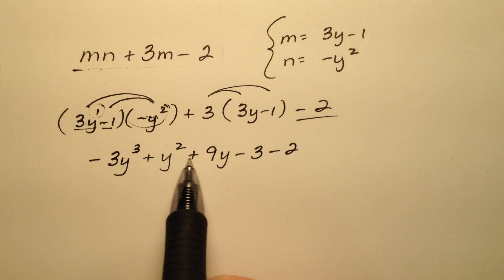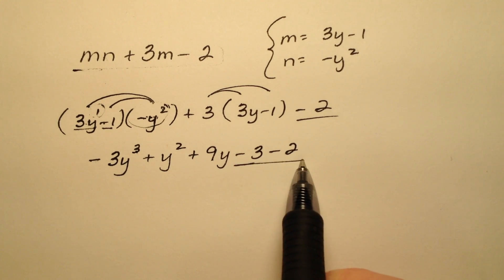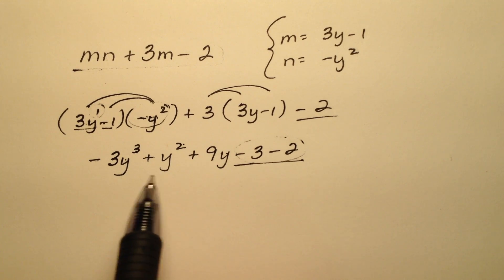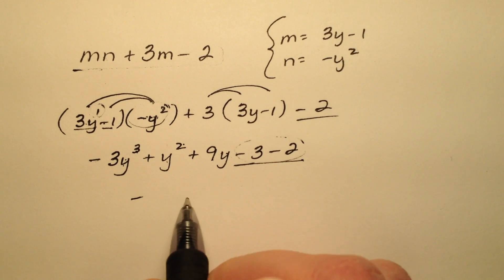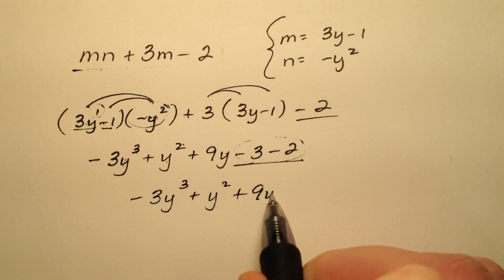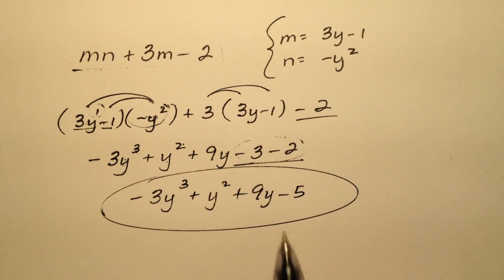So it seems like the only like terms I have are these constants on the end, because this is y cubed, y squared, and a single y, so these are not like terms. So the best I can do is just say negative 3y cubed plus y squared plus 9y minus 5.